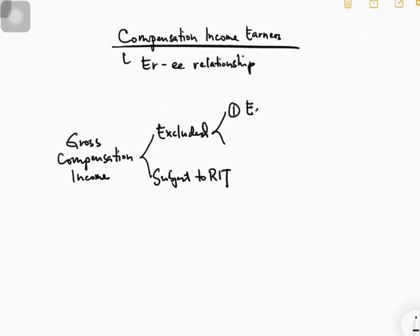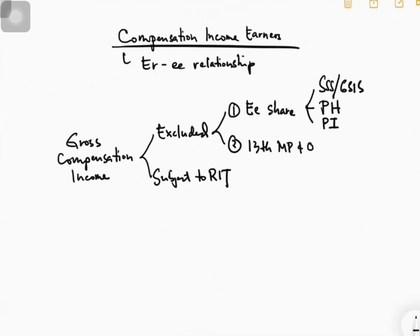Number one excluded is the share of the employee in SSS or GSIS, PhilHealth, and Pag-ibig — those are excluded. Another item also excluded is the 13th month pay and other benefits, but there is a limit: the maximum exclusion here is only 90,000.